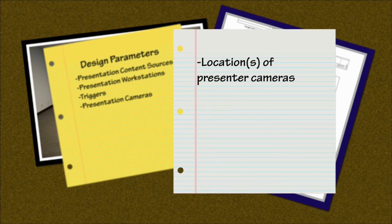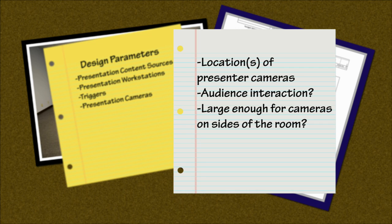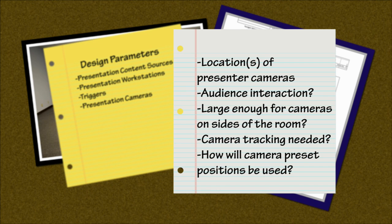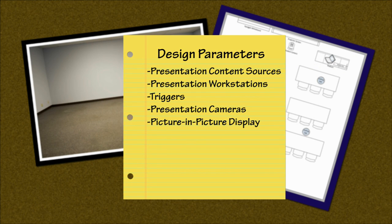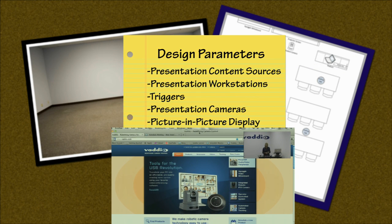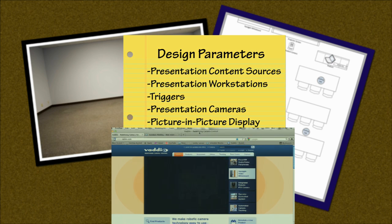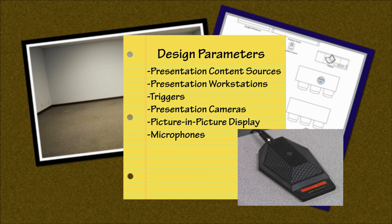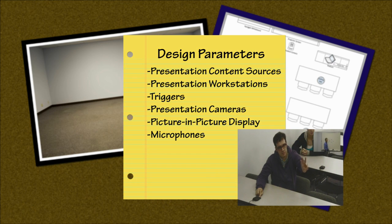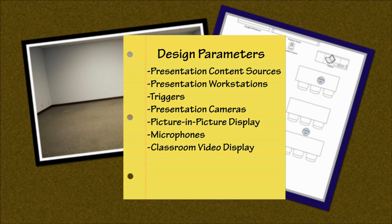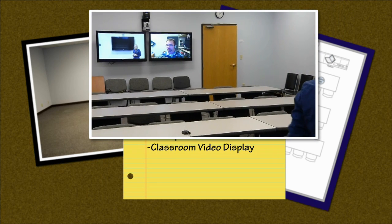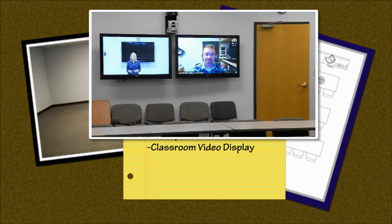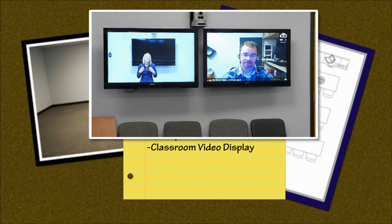List the location or locations of your presenter cameras. Will there be audience interaction? Will the presentation area be large enough to place cameras on the sides of the room for a wider range position? Is camera tracking needed? How will you be utilizing camera preset positions? Picture in picture display: determine if it is necessary to keep the presenter visible on camera at all times, even when switching through different sources. Microphones: do the students or audience members want to be seen and heard during the presentation? Classroom video display: determine the types and sizes of classroom video displays for your room. You may also want to consider a confidence display monitor for the presenters to see themselves and know what the far end is seeing during a video conferencing call, distance learning, or lecture capture application.